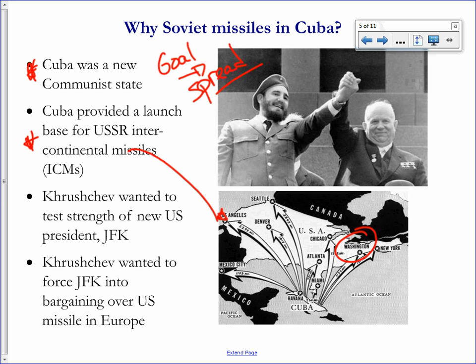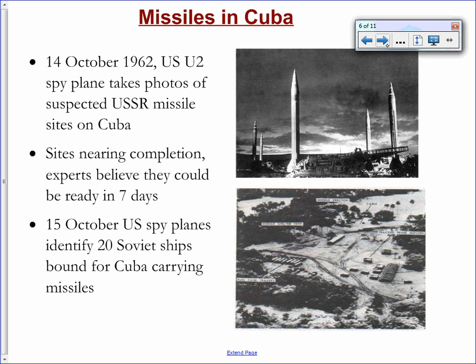Soviet leader Nikita Khrushchev, shown here with Fidel Castro, saw JFK as a new, untested leader and viewed this as an opportunity to bully JFK or get the upper hand — to show he was in charge. But ultimately it came down to using this as a chess match to try and force the United States to give up some concessions.